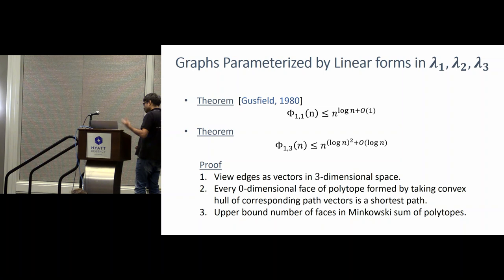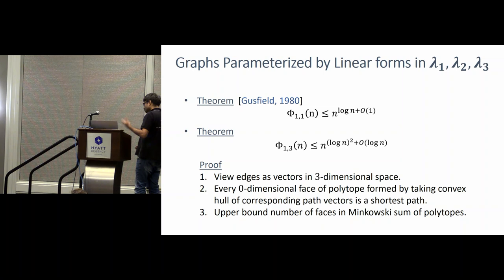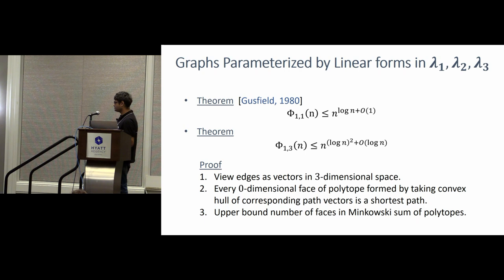And the proof techniques are, we view the edges now as vectors in a three-dimensional space, and every, so, now, since these are vectors, we can talk about the convex hull of these vectors, and it turns out, you know, take the convex hull of these vectors, the points that are the extreme points are typically the ones that are the shortest paths. And then we use ideas from Minkowski sums and convex hulls. So, that's our work. I'll just stop with this.